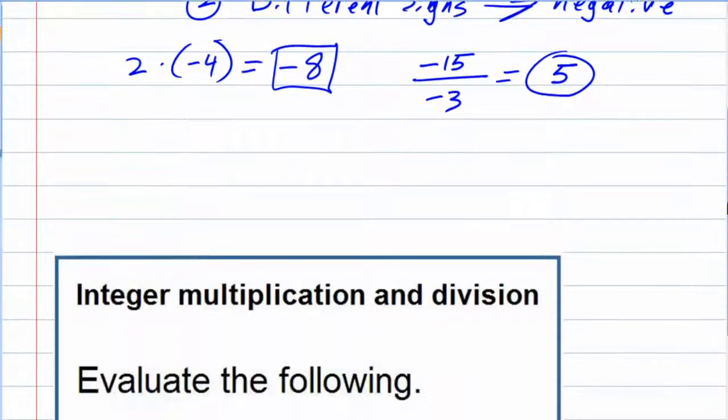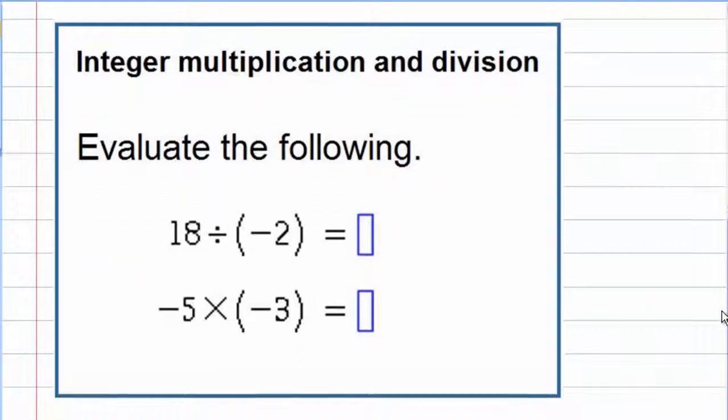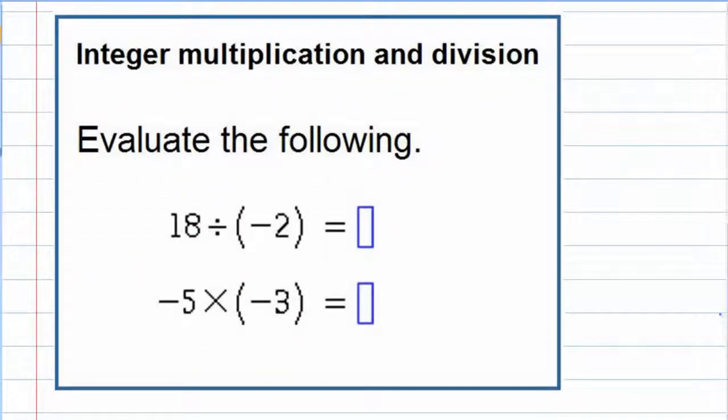So taking a look at our two examples here, we're asked to evaluate the following. 18 times a negative 2, remember if there's no sign out in front there, it's an assumed positive. So we've got a positive and a negative. Those are different signs. So we're dividing, and it's going to be a negative answer. So 18 divided by 2 is negative 9.